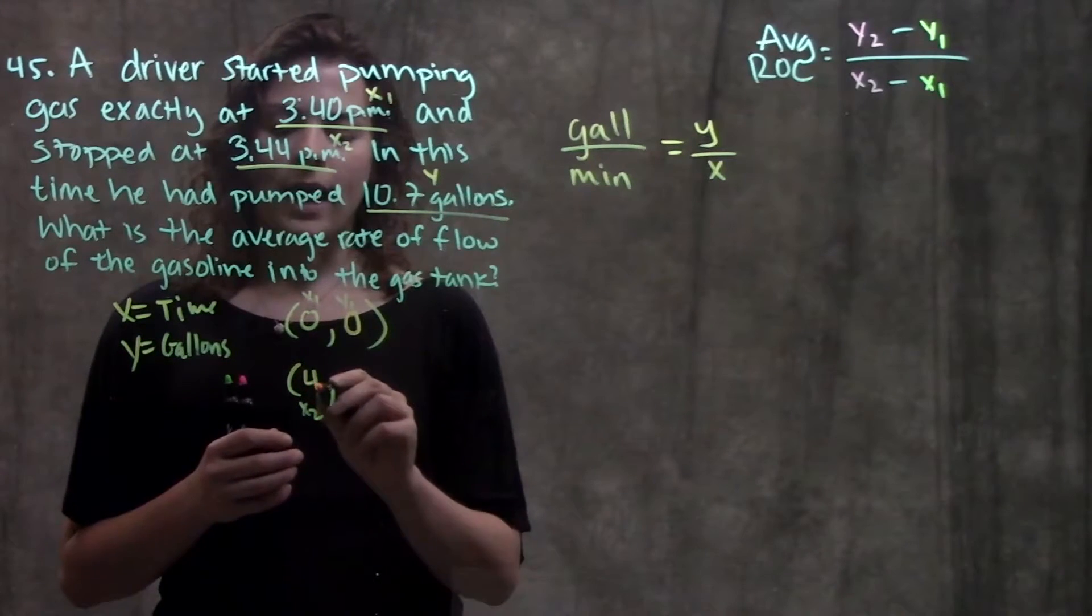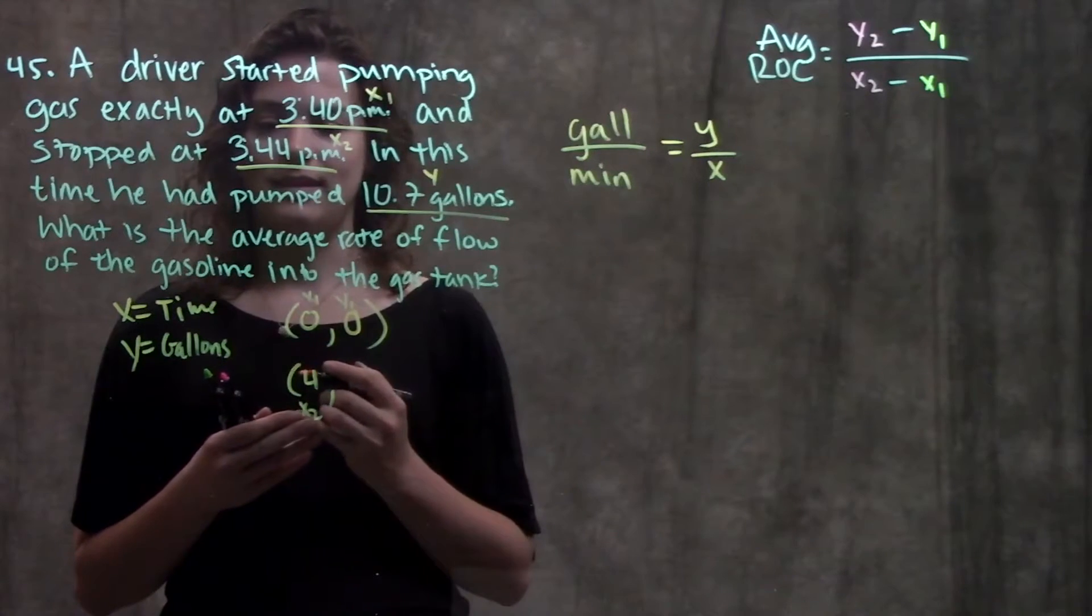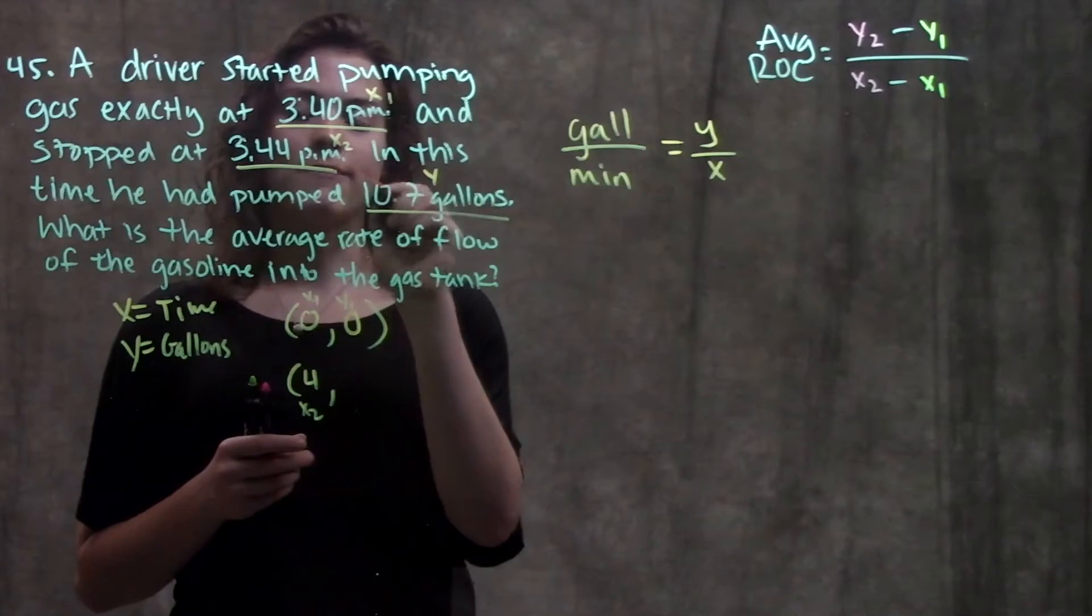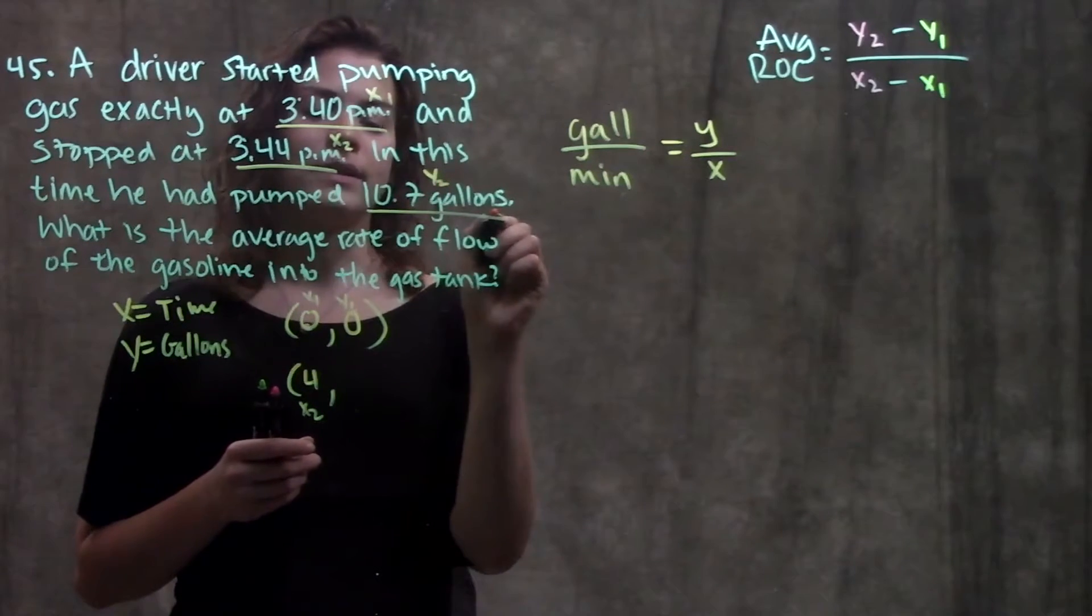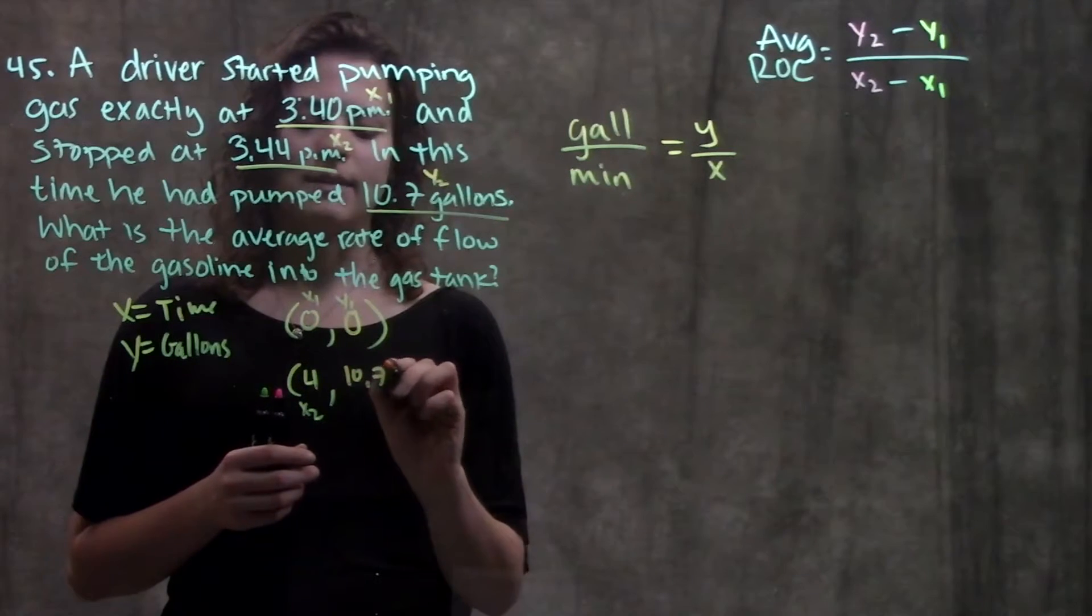And then I say, okay, I'm at x2 at four minutes. At that time, how many gallons were in the tank? I go back to my problem, and they tell me that at four minutes, 10.7 gallons were pumped into the tank. So that tells me that my y2 is 10.7.